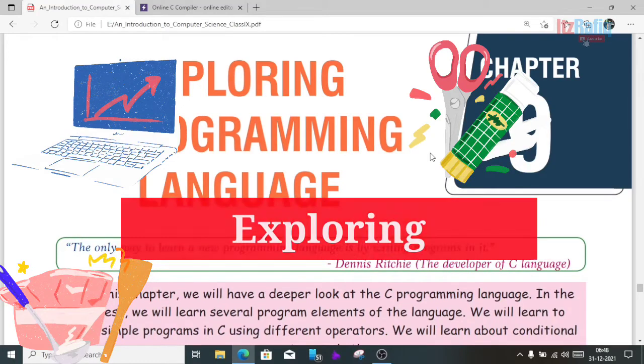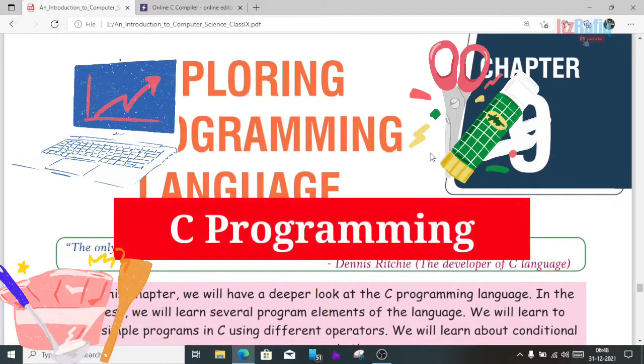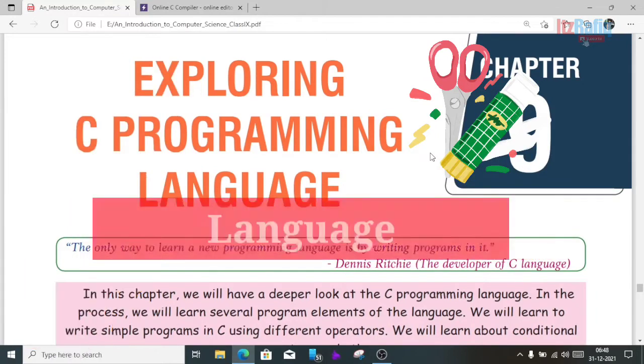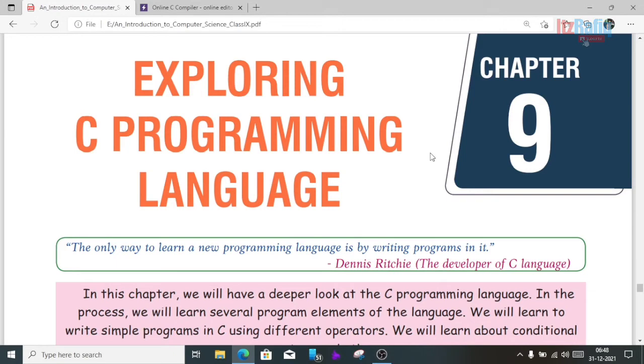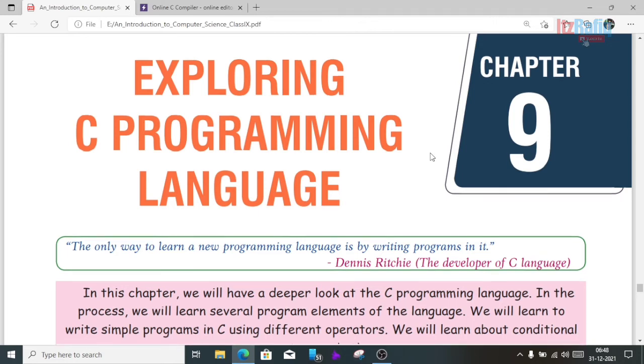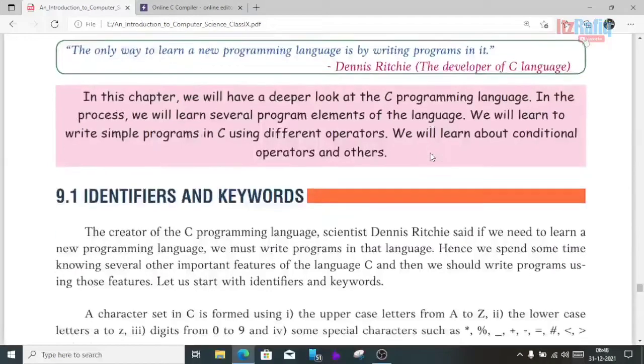In the previous video we discussed high level and low level languages. We learned about the features of high level languages and low level assembly languages. That's why we can also call C a middle level programming language.